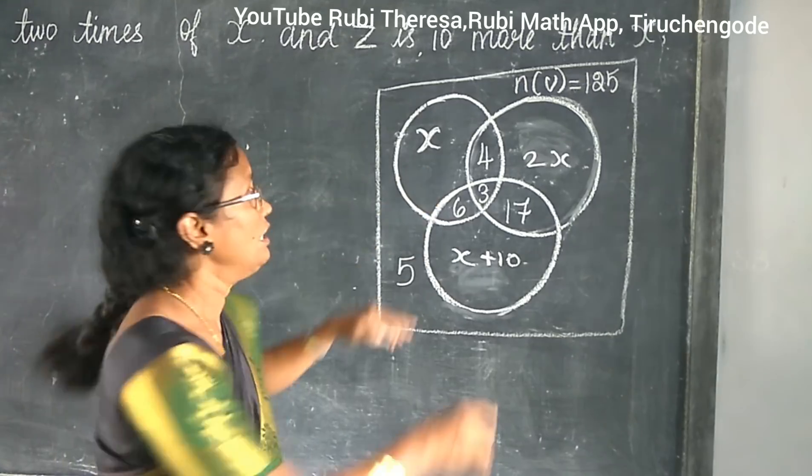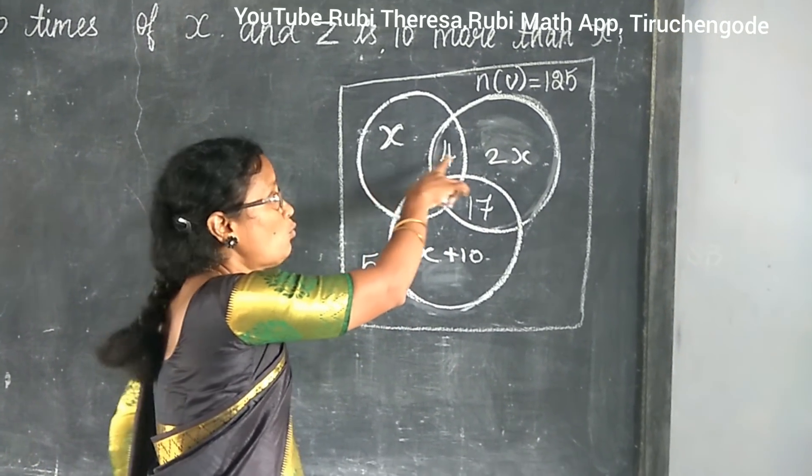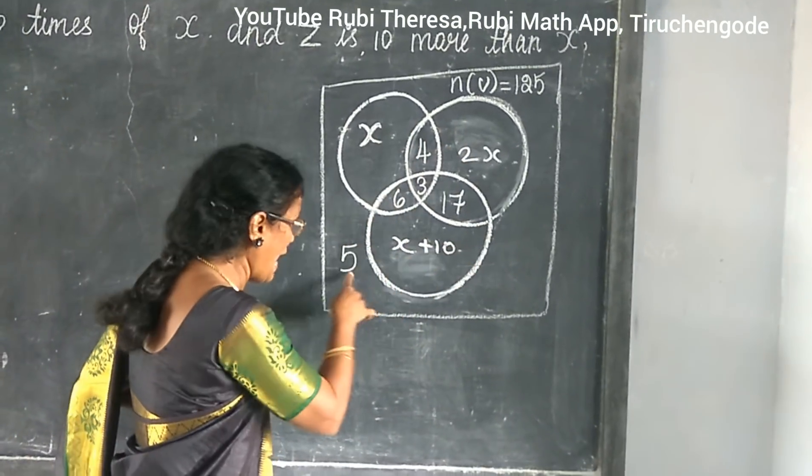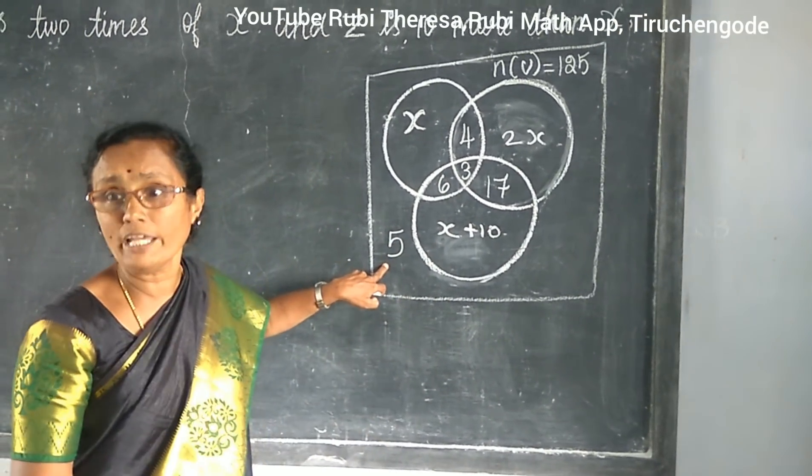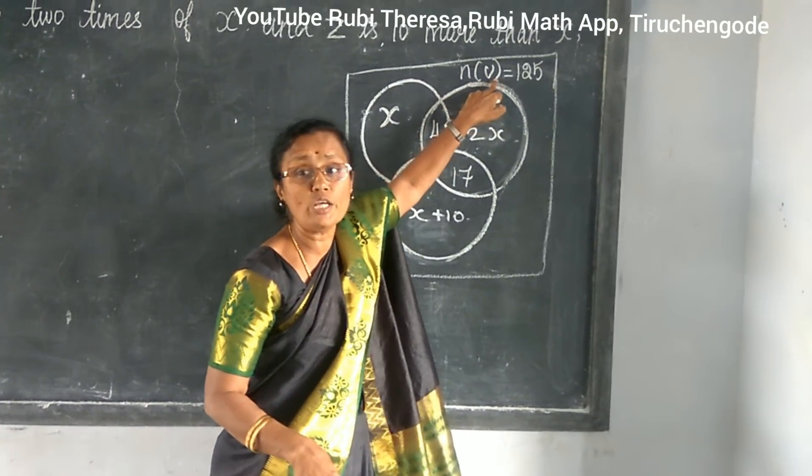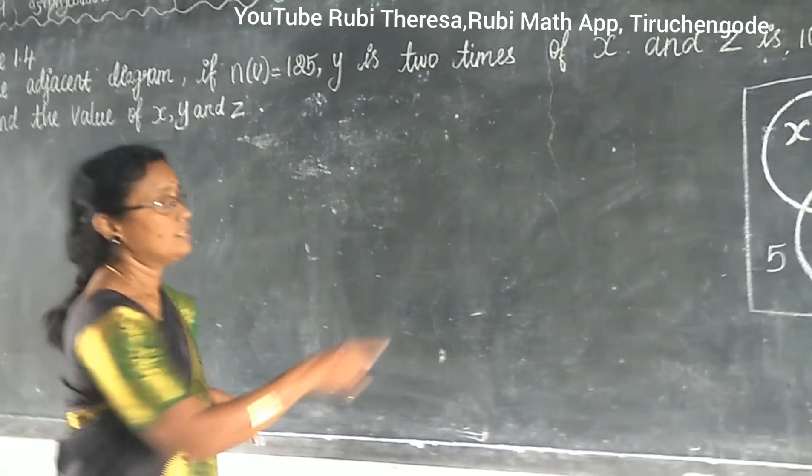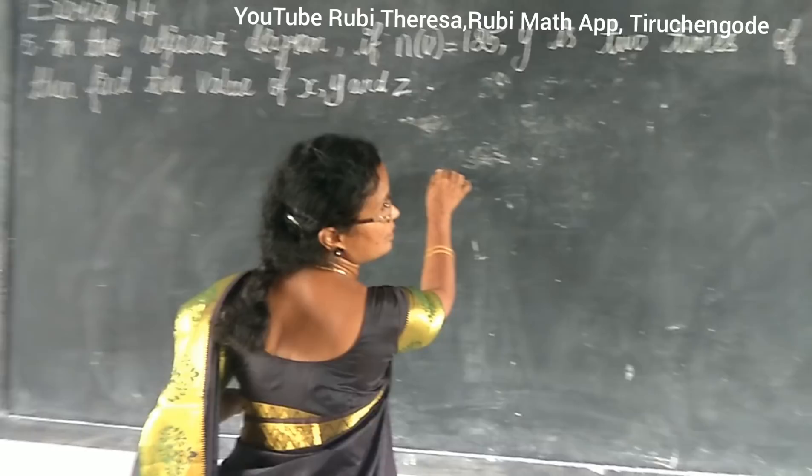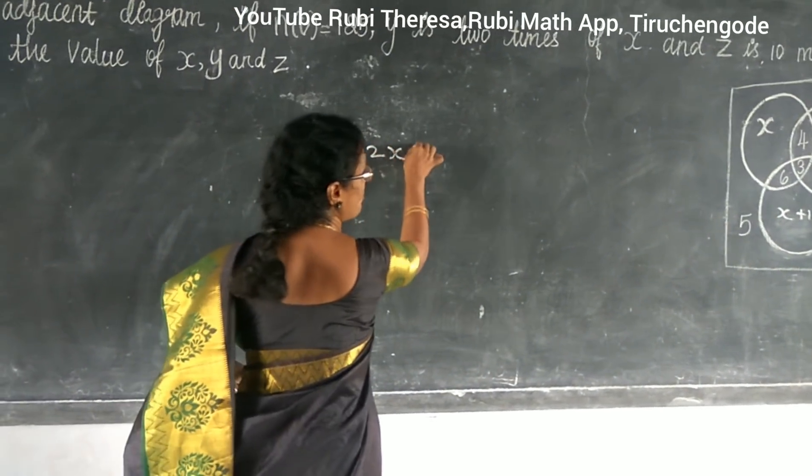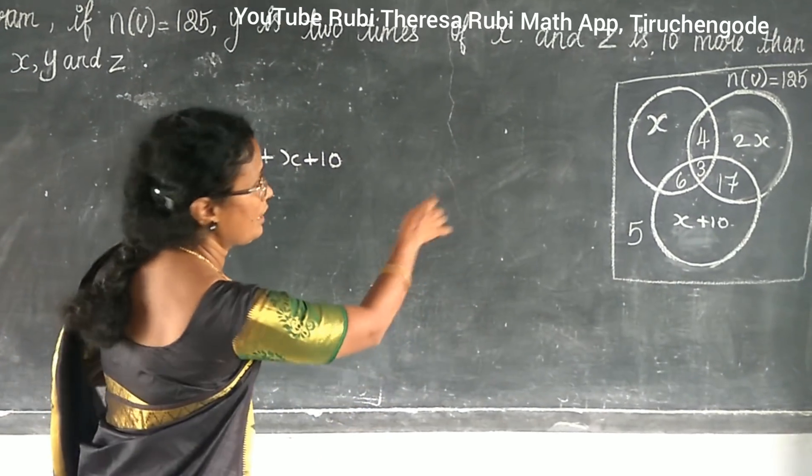We know already we got to add everything. Only 1, only 2, all the 3. Everything you must add it and also this 5. Why you got to add this 5 also? Because n of U equal to 125. So shall we add? What is it? What is given first? Only when you say X plus 2X plus X plus 10. Next step.